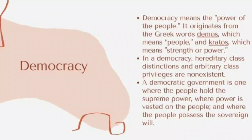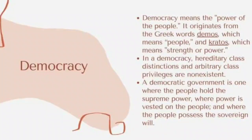Athens or the Athenians were the first civilization to impose democracy in their governance. In a democracy, hereditary class distinctions and arbitrary class privileges are non-existent. A hereditary class is a social class separated from others by distinctions of hereditary rank, profession, or wealth — such as the caste system in India. Arbitrary class privilege is also not given importance.